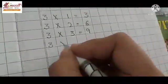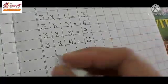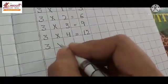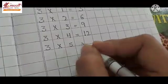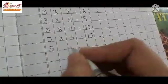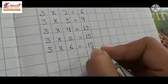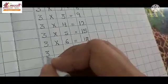3 times 4 is 12. 3 times 5 is 15. 3 times 6 is 18. 3 times 7 is 21.